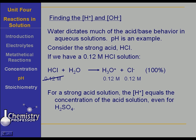You will notice that we have no more hydrochloric acid in the undissociated form, and this is typical of a strong acid. The hydrogen ion concentration is the concentration of the acid solution, and that is true even for acids that have more than one proton, such as sulfuric acid.